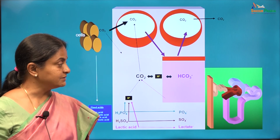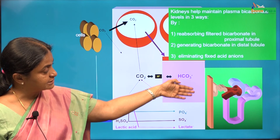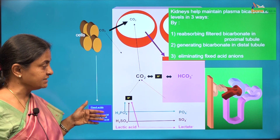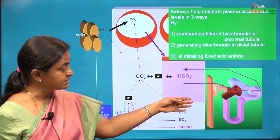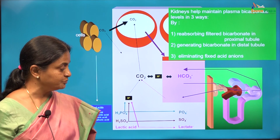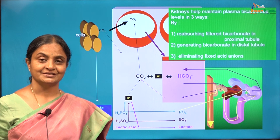This has been a long session and it's time to summarize. Kidneys help maintain plasma bicarbonate levels so as to buffer the protons released by fixed acids in three ways: plasma bicarbonate is maintained by reabsorption in the proximal tubule, generation in the distal tubule, and by eliminating the fixed acid anions. Thank you for watching.